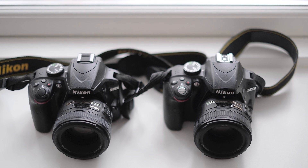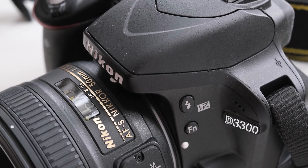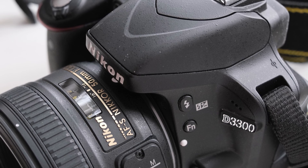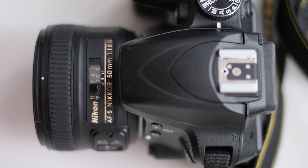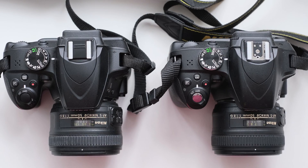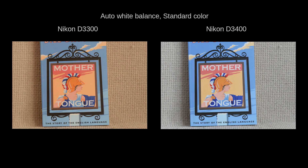All test photos were taken with white balance calibrated using white paper, not auto white balance. This is crucial because different auto white balance variations could complicate the dynamic range comparison. Indeed, the D3300 and D3400 use white balance differently, at least in some situations. An example is this book I photographed, where the D3300 rendered warmer colors than the D3400. Therefore, my careful calibration of white balance for both cameras was justified.